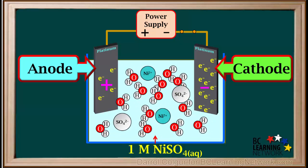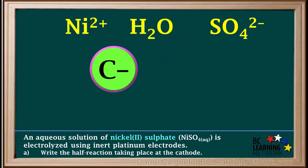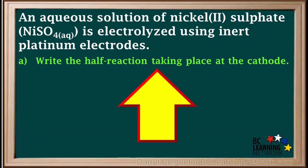Now we'll make a diagram based on what we have. In the solution we have Ni2+ ions, sulfate ions, and water molecules. We'll represent the cathode here with a C-, and the anode here with an A+. Question A asks us to